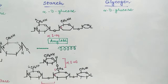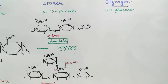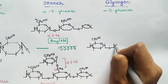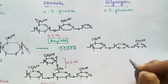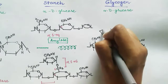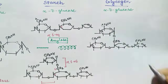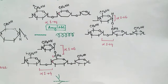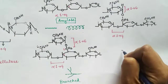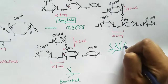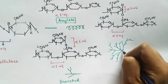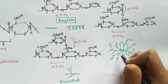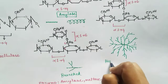Coming to glycogen — it is also a polysaccharide of alpha D glucose, meaning many alpha D glucose molecules are linked by glycosidic bonds. Glycogen has no linear structure; it only has a branched structure like the amylopectin of starch, but the branching is much more extensive in glycogen than in starch amylopectin. It is a highly branched structure with more alpha 1-6 glycosidic bonds, and this bond can also be broken by amylase and maltase enzymes.